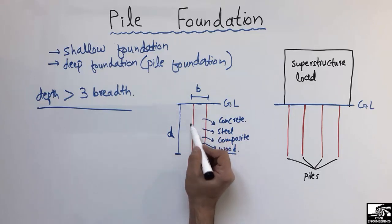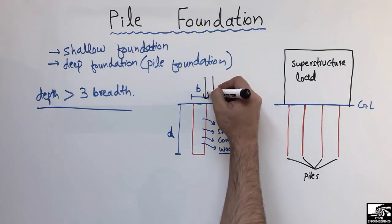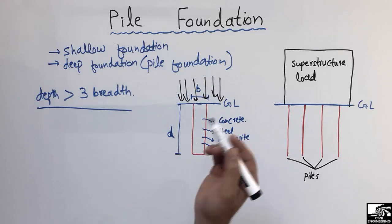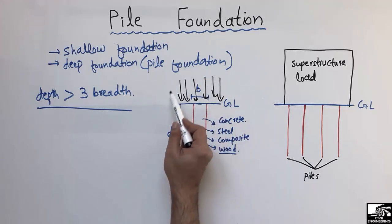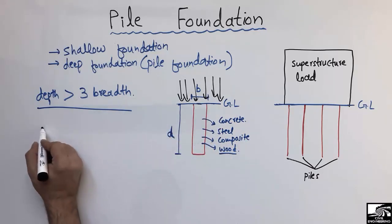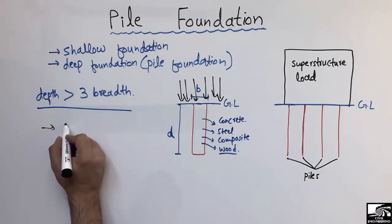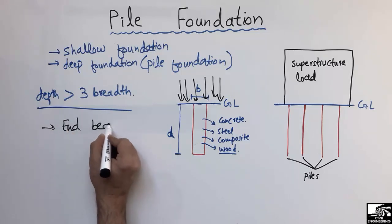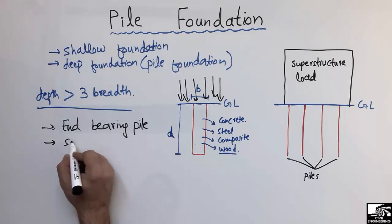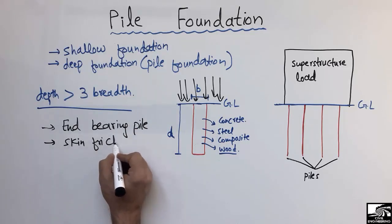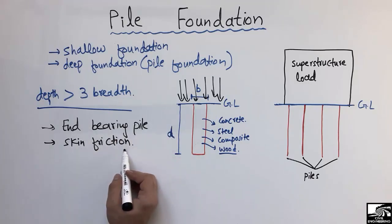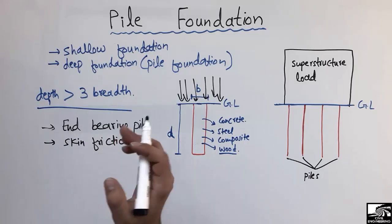Consider a pile with a load acting on it from the superstructure — which may be a skyscraper, a multi-story building, or a bridge. When the load acts on this pile, it resists the load by two methods. One is called the end-bearing pile, and the second one is called the skin friction pile. These are the two types of pile, and both have different reactions to the applied load.